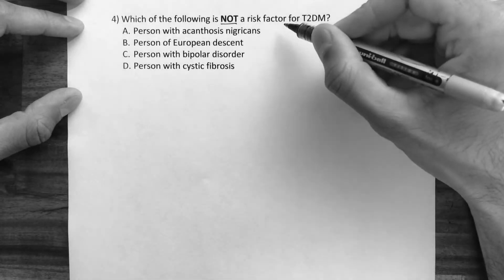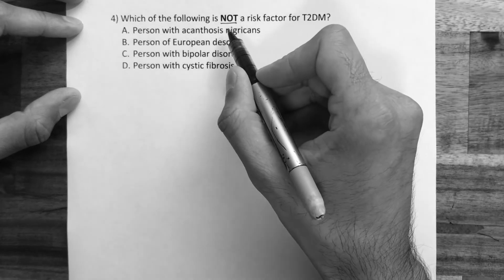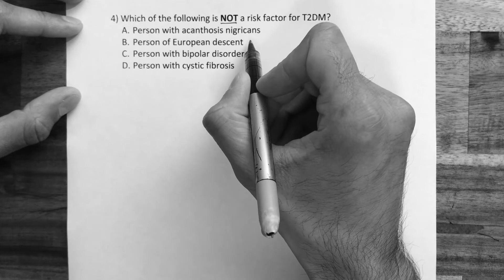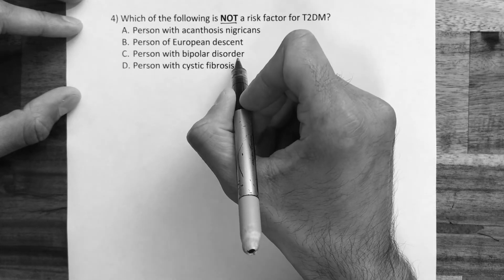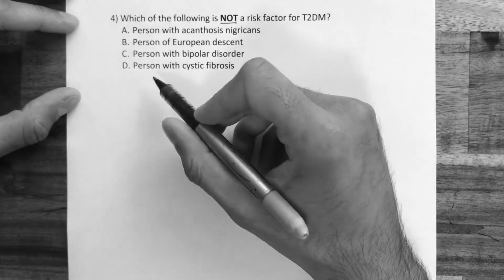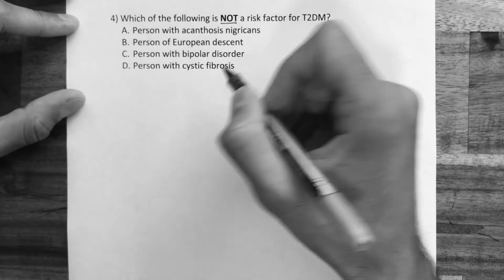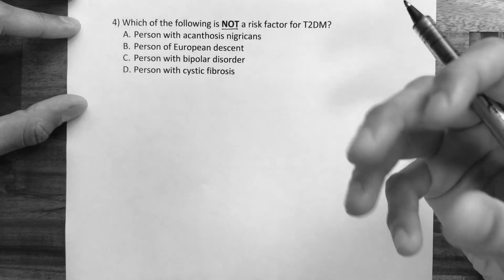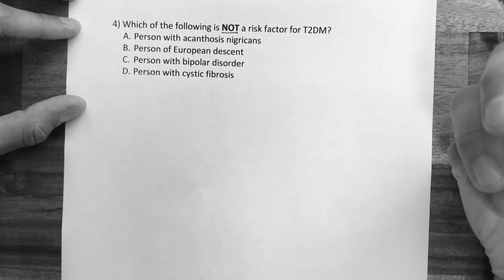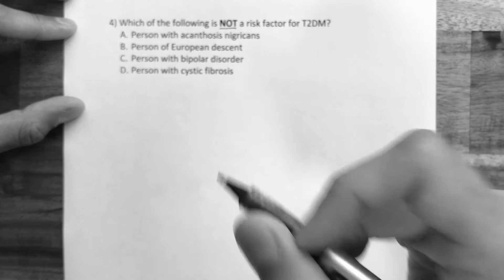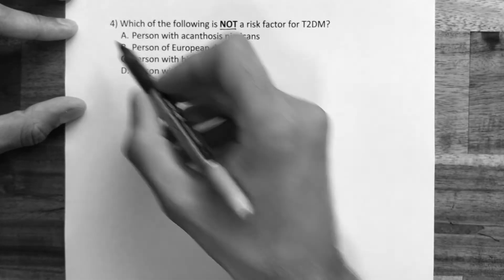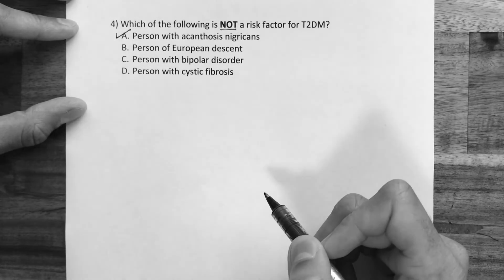Question four is about risk factors. Which of the following is not a risk factor for type 2 diabetes? Options: a person with acanthosis nigricans; a person of European descent; a person with bipolar disorder; a person with cystic fibrosis. Acanthosis nigricans is a skin condition with discoloration mainly in the armpits, groin, and neck — importantly it can be indicative of insulin resistance and is a risk factor — check mark.